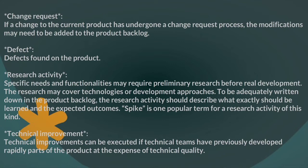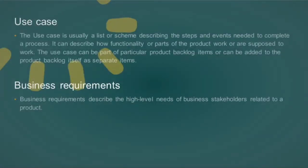Technical improvements can be executed if technical teams have previously developed parts of the product rapidly at the expense of technical quality. Use case: the use case is usually a list or scheme describing the steps and events needed to complete a process. It can describe how functionality or parts of the product work or are supposed to work. The use case can be part of particular product backlog items or can be added to the product backlog itself as separate items.